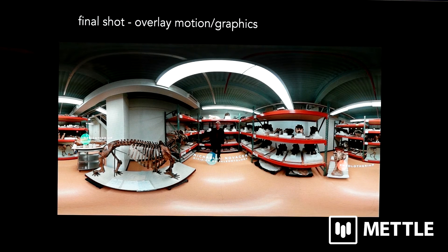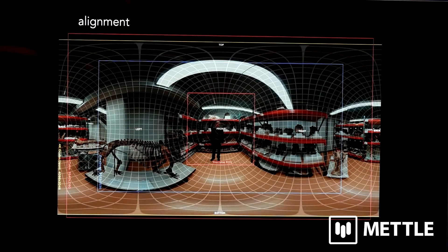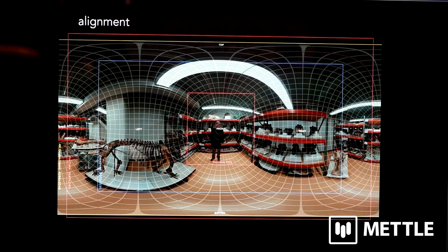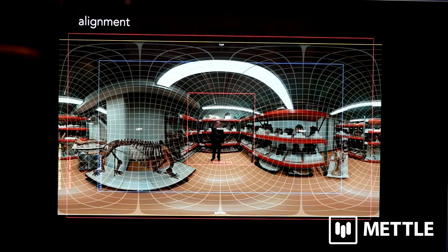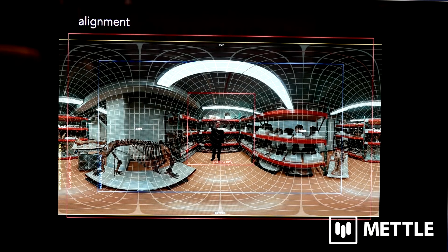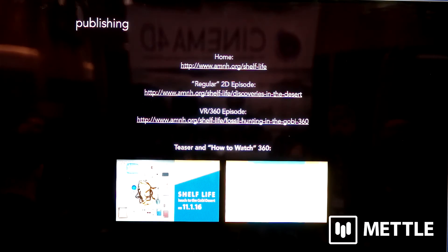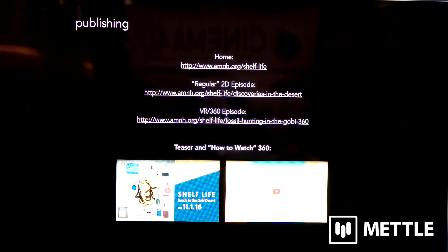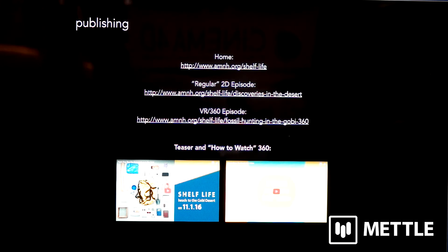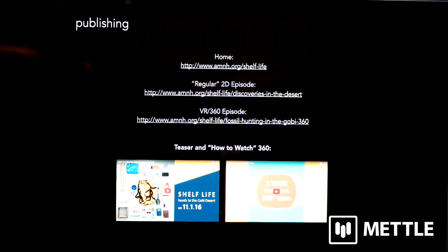After that, we overlay motion graphics and lower thirds and identify the specimens in the room. We also have a template to shift everything and make sure it's within the field of view — which is YouTube's limited field of view. You can watch it at amnh.org/shelflife.